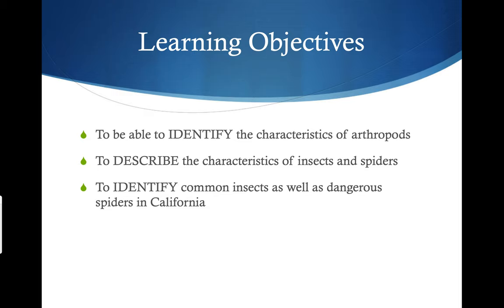The arthropods. We're going to jump right in and take a look at our learning objectives. First of all, to be able to identify the characteristics of arthropods. Secondly, to describe the characteristics of insects and spiders. And lastly, to identify common insects as well as dangerous spiders here in California.